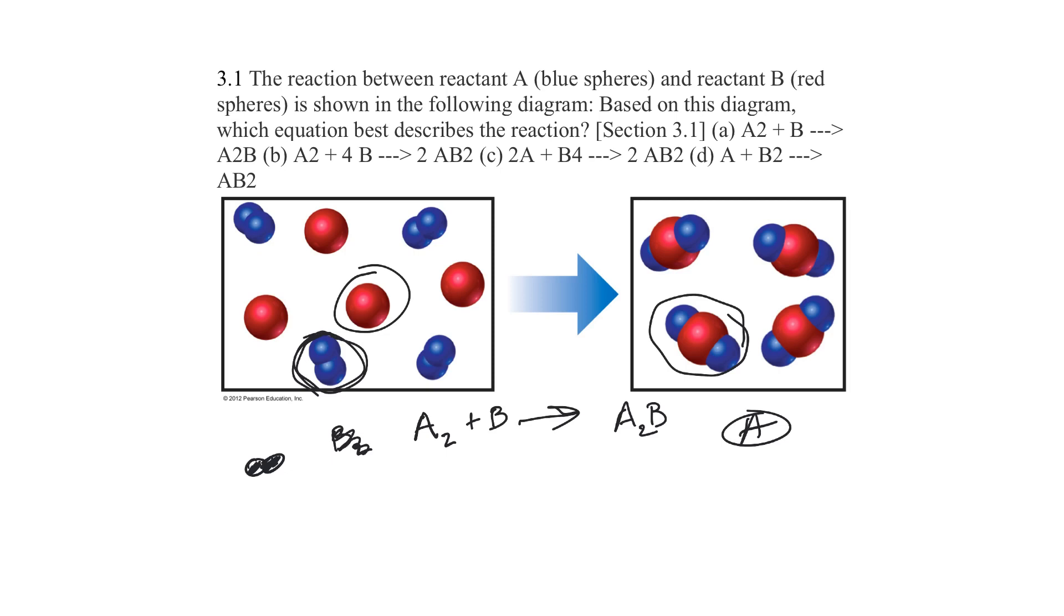gives me AB squared. Well, that would mean a molecule with two blues or two red, let's see, A is blue, B is red. Yeah, this would not be it. I'd say A is your right answer.